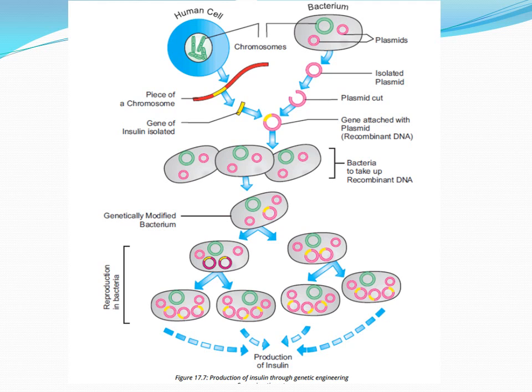The second step is the insertion of the gene into the vector. The host organism here is bacteria, because the multiplication rate of bacteria is high, giving us millions of copies of the DNA. This isolated gene has to be transferred into the host organism via a vector, which is a carrier. In this case, the carrier is the plasmid of the bacteria — extra circular DNA known as plasmid — which can act as a vector to carry the gene of interest.